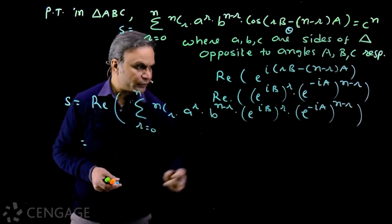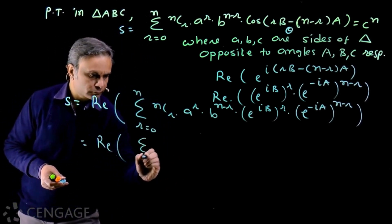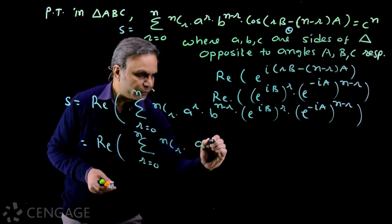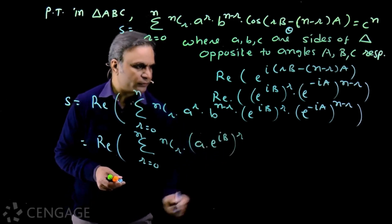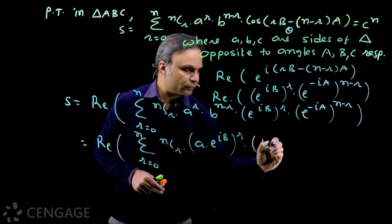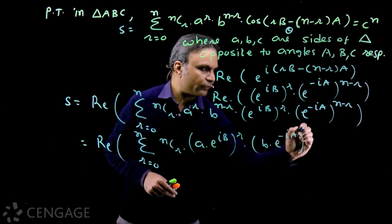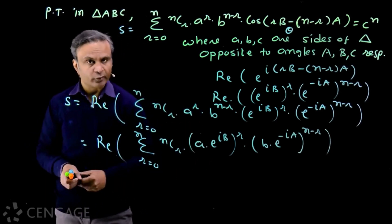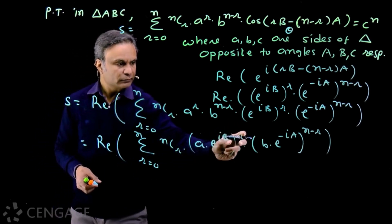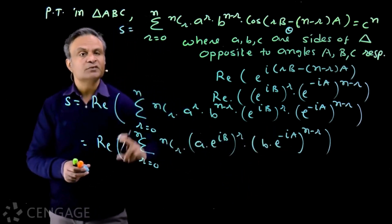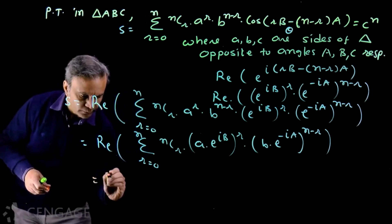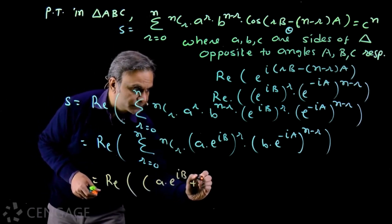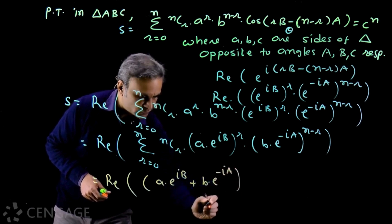We simplify the general term to use the binomial expansion. We rewrite it as nCr · (a · e^(i·B))^r · (b · e^(−i·A))^(n−r). This matches the standard general term nCr · x^r · y^(n−r), which sums to (x + y)^n. So we now have the real part of (a · e^(i·B) + b · e^(−i·A))^n.